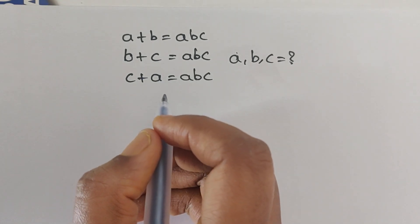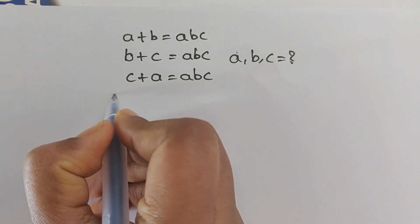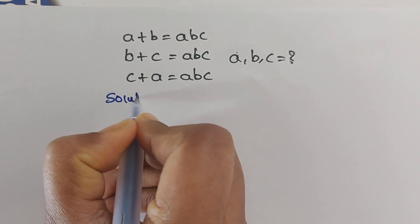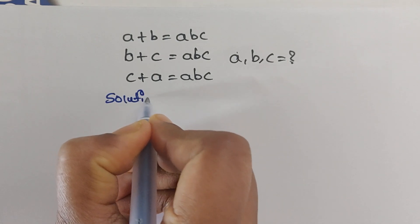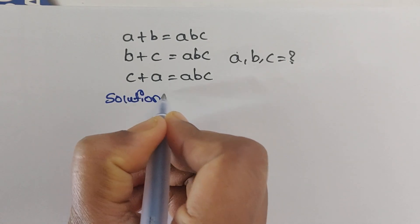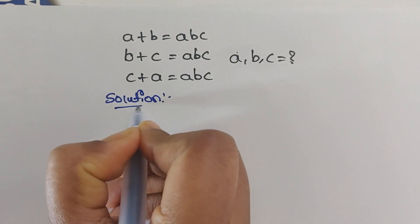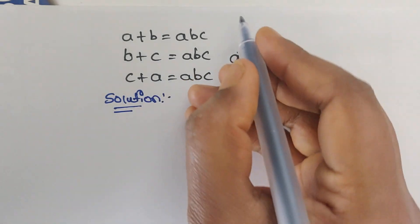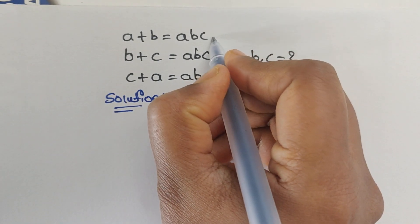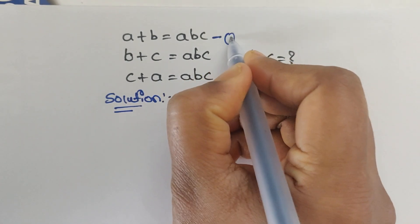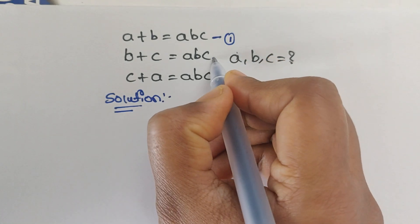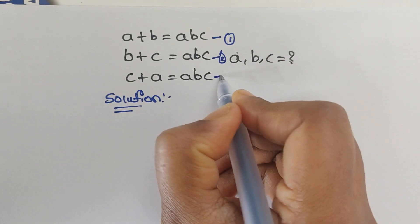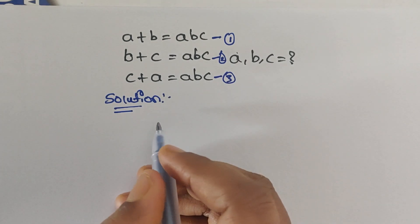So how do we solve this problem? Let's see. We have been given three equations. Let us consider this is equation 1, this is equation 2, and this is equation 3.